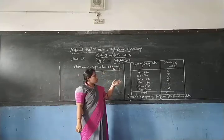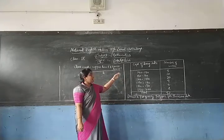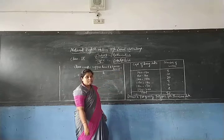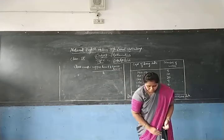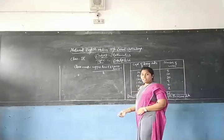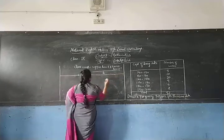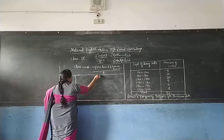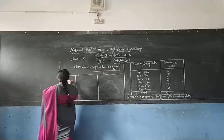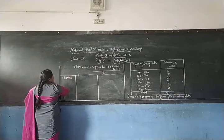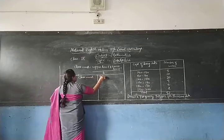For constructing the frequency polygon for the given class interval, we have to make another column — that is the class mark column. Once we draw that class mark column, we have to proceed for solving the problems. The table will have columns for classes (cost of living index), class mark, and frequency.